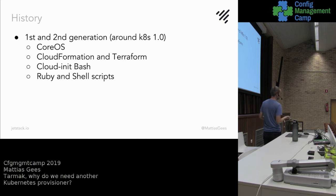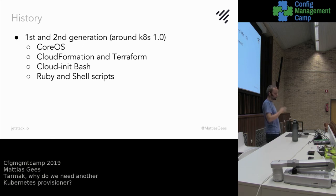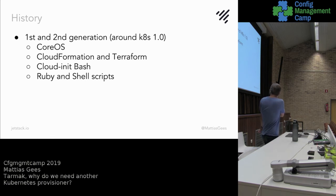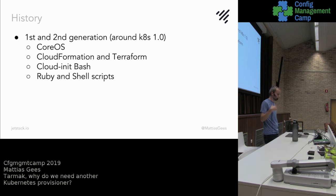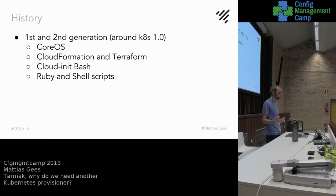Two of my colleagues, Christian Simon and Matt Bates, independently from each other, started to create a first and second generation of Kubernetes orchestration at different companies. Christian joined later with Matt Bates to create Tarmac. The first generation used CoreOS as a base operating system. For infrastructure on AWS, Christian used CloudFormation to orchestrate the whole AWS environment, and they used cloud-init bash scripting for configuring every individual instance — from etcd to the control plane to the worker nodes. Christian created some Ruby glue around that to orchestrate everything.